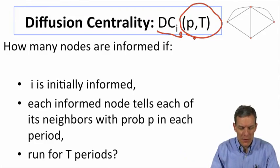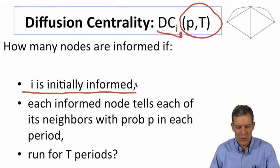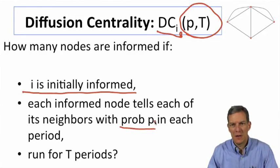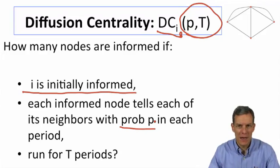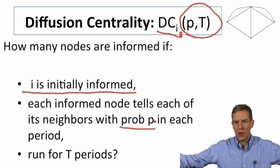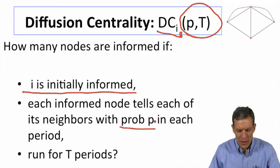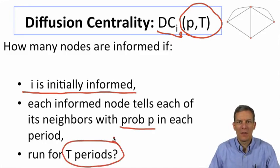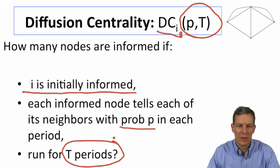But in general, we could think of, there's some node which is initially informed. And how influential is it going to be? Well, we could do a calculation where each node is going to talk to its friends with a probability P in any given period. So I talk to my friends with some probability P that goes on. Then they talk to their friends, and we continue on in this manner. And this is going to run for T periods, some number of periods. And then at the end, we'll find out how many people have heard the news by the end of this process.